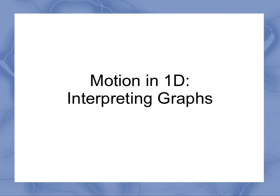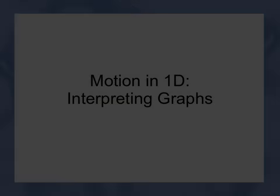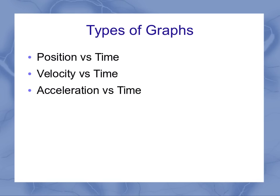Now let's take a look at how we can interpret graphs from motion in 1D. We've got three different graphs we're going to look at: position versus time, which we can get the most information from, velocity versus time, and acceleration versus time.